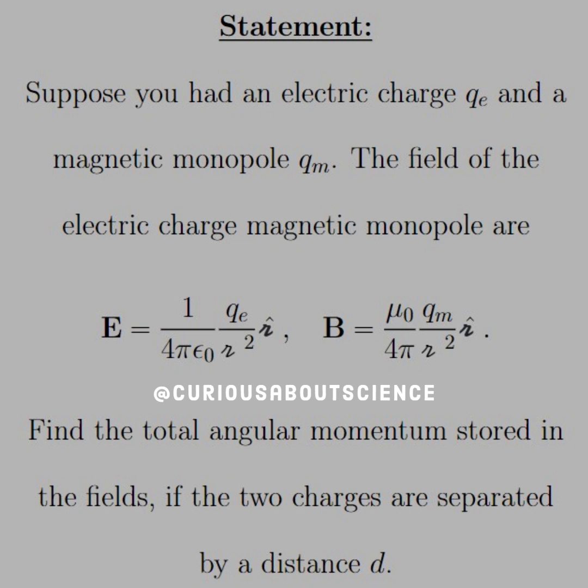The field of the electric charge and magnetic monopole are 1 over 4 pi epsilon naught, QE over script R squared in the script R-hat direction. B is equal to mu naught over 4 pi, QM over script R squared, R-hat direction. Again, pretty symmetric. Find the total angular momentum stored in the fields if the two charges are separated by distance D.